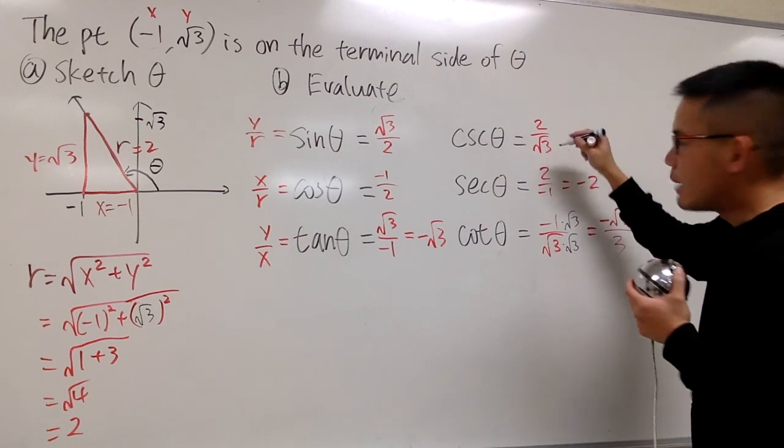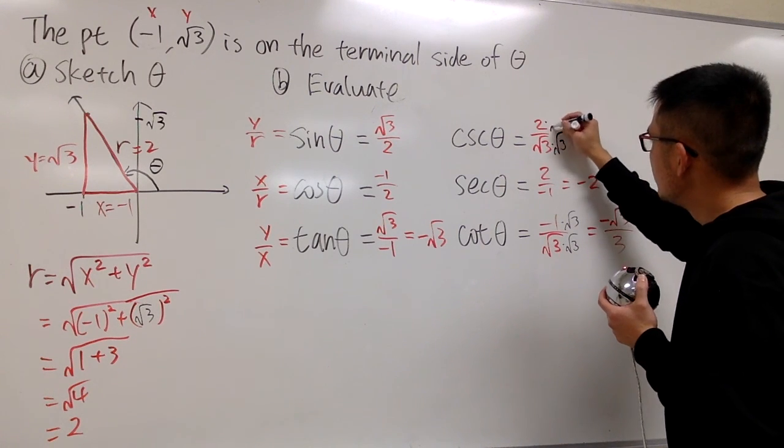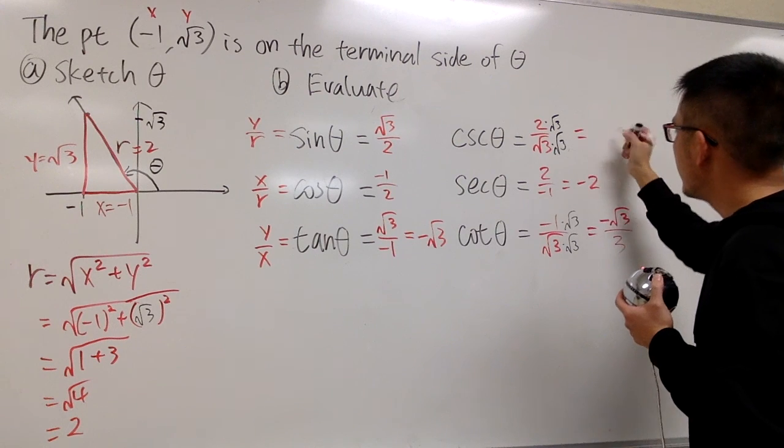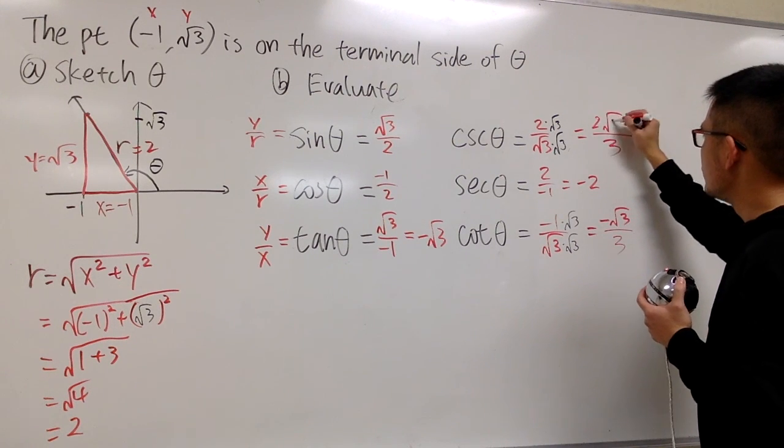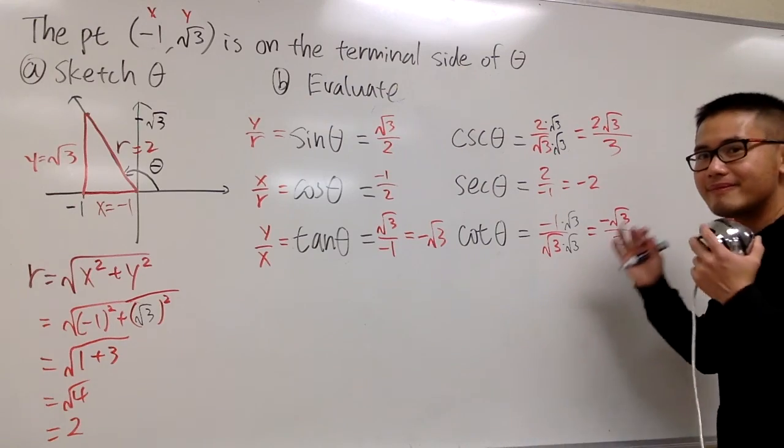And rationalize the denominator, multiply by square root of 3, multiply by square root of 3, and you get 3 on the bottom, 2 square root of 3 on the top. That's it.